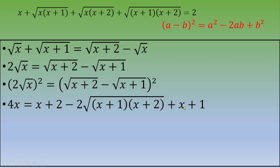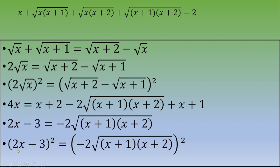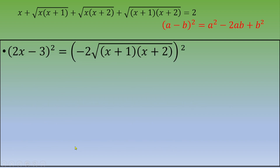Collecting the x terms and constants on the right: x + x = 2x and 2 + 1 = 3, so we get 4x − 2x − 3 = −2√((x+1)(x+2)), which simplifies to 2x − 3 = −2√((x+1)(x+2)). We now square both sides again to clear the square root.